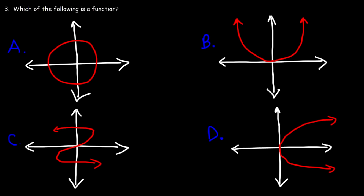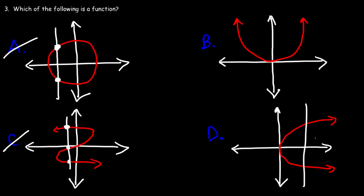Number 3. Which of the following is a function? For a graph to represent a function, it has to pass the vertical line test. Looking at answer choice A, a vertical line touches it at two points, so A does not represent a function. Answer choice C touches the vertical line at three points, so it fails. For D, it touches at two points, so D is not a function. But for B, it only touches at one point, so answer choice B is a function.